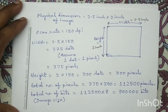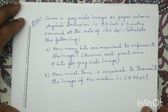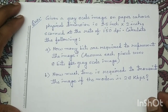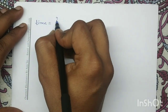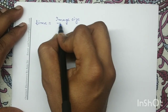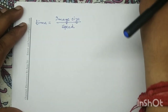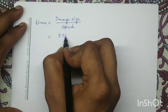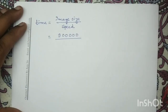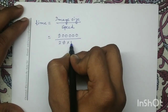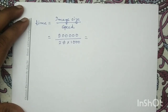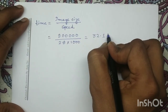Next we have to determine the transmission time. The mathematical equation for transmission time is: time required for transmission equals image size divided by speed. The image size is 900,000 bits and the speed given in this question is 28 kbps, which in terms of bps is 28 into 1000. If we simplify this, we obtain 32.14 seconds.